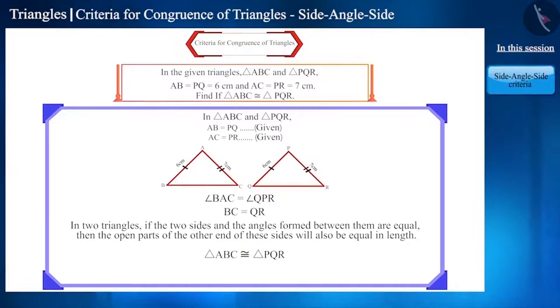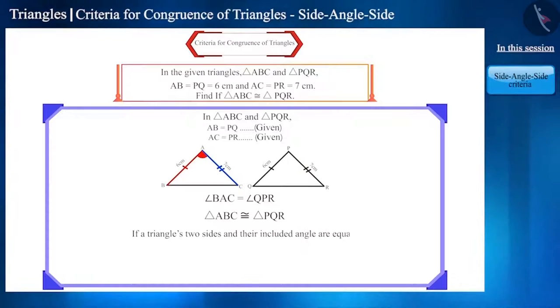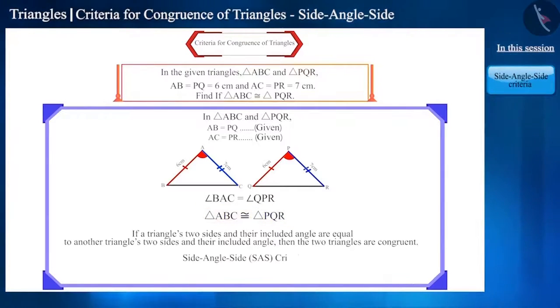Then we can say that these two triangles are congruent. That is, if a triangle's two sides and their included angle are equal to another triangle's two sides and their included angle, then the two triangles are congruent. This is called side-angle-side or SAS criterion.